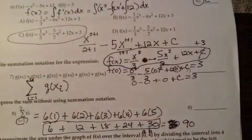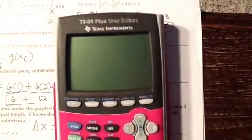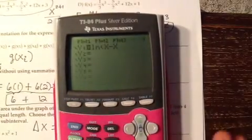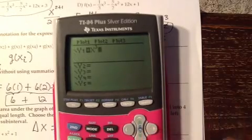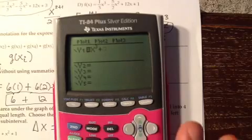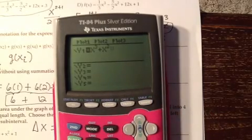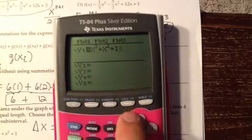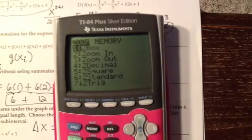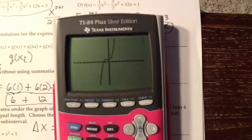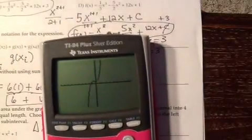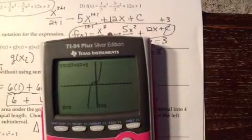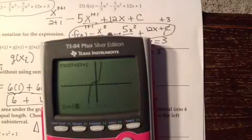First I'm going to graph to see what the graph looks like of this function. We're going to look at x raised to the third plus x squared plus 1. I'll zoom in to standard to see what this looks like. We're only looking on the interval from 0 to 4. If I trace, when x is 0, y is 1. And when x is 4, y is 81.